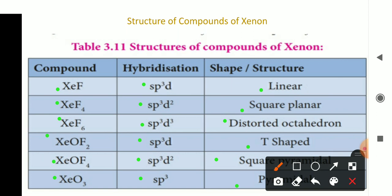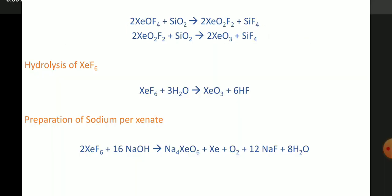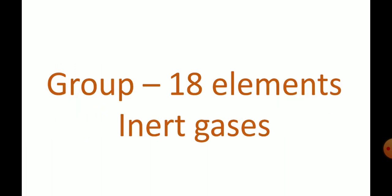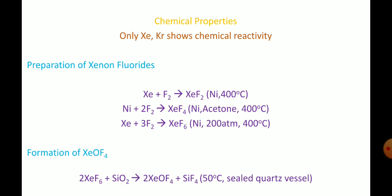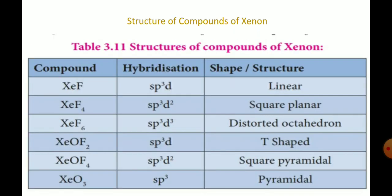If you have any doubt regarding how to find hybridization and how to find the structure of any molecule, you can refer to your 11th standard second volume chemistry book, where it is given in detail how to find the hybridization of any molecule and how to predict the geometry using VSEPR theory — Valence Shell Electron Pair Repulsion theory. From a competitive examination perspective, predicting hybridization and geometry is very important. So, dear students, with this, the video ends. We have seen the occurrence, physical properties, chemical properties, and structure of certain compounds of xenon for Group 18 noble gases.